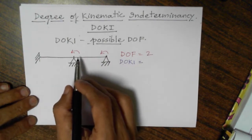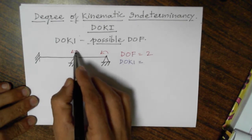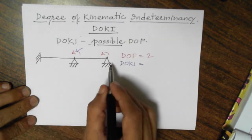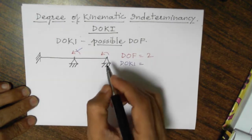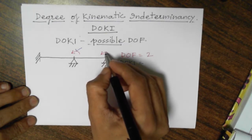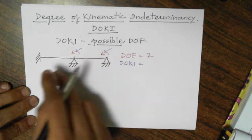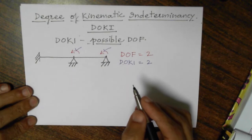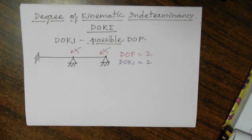Out of the degrees of freedom, we have to see what is possible and what is independent. This rotation — is it possible? Yes, it is always possible because it is independent of any other support condition. Same is the case with rotation at the other end — it is independent of all other support conditions and loading conditions. So both are possible. Therefore, degree of kinematic indeterminacy is 2.